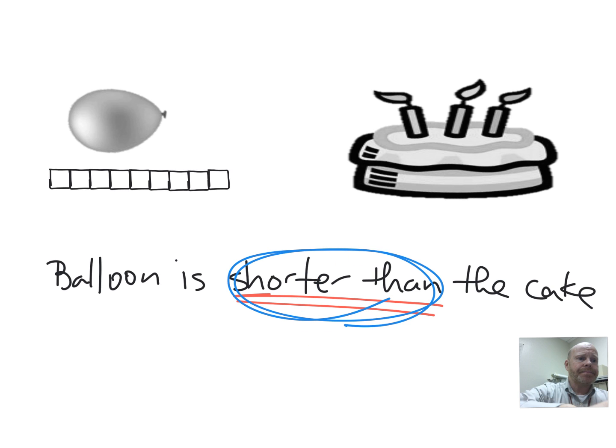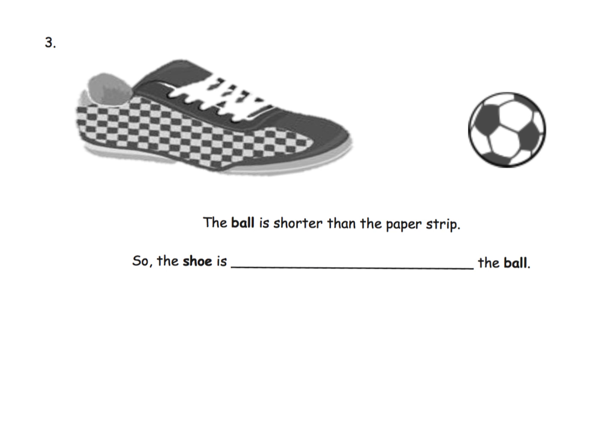Don't shortchange your vocabulary. You've got your paper strips and you can use your paper strips to compare the shoe and the ball. We should be able to see the shoe is longer than the ball.